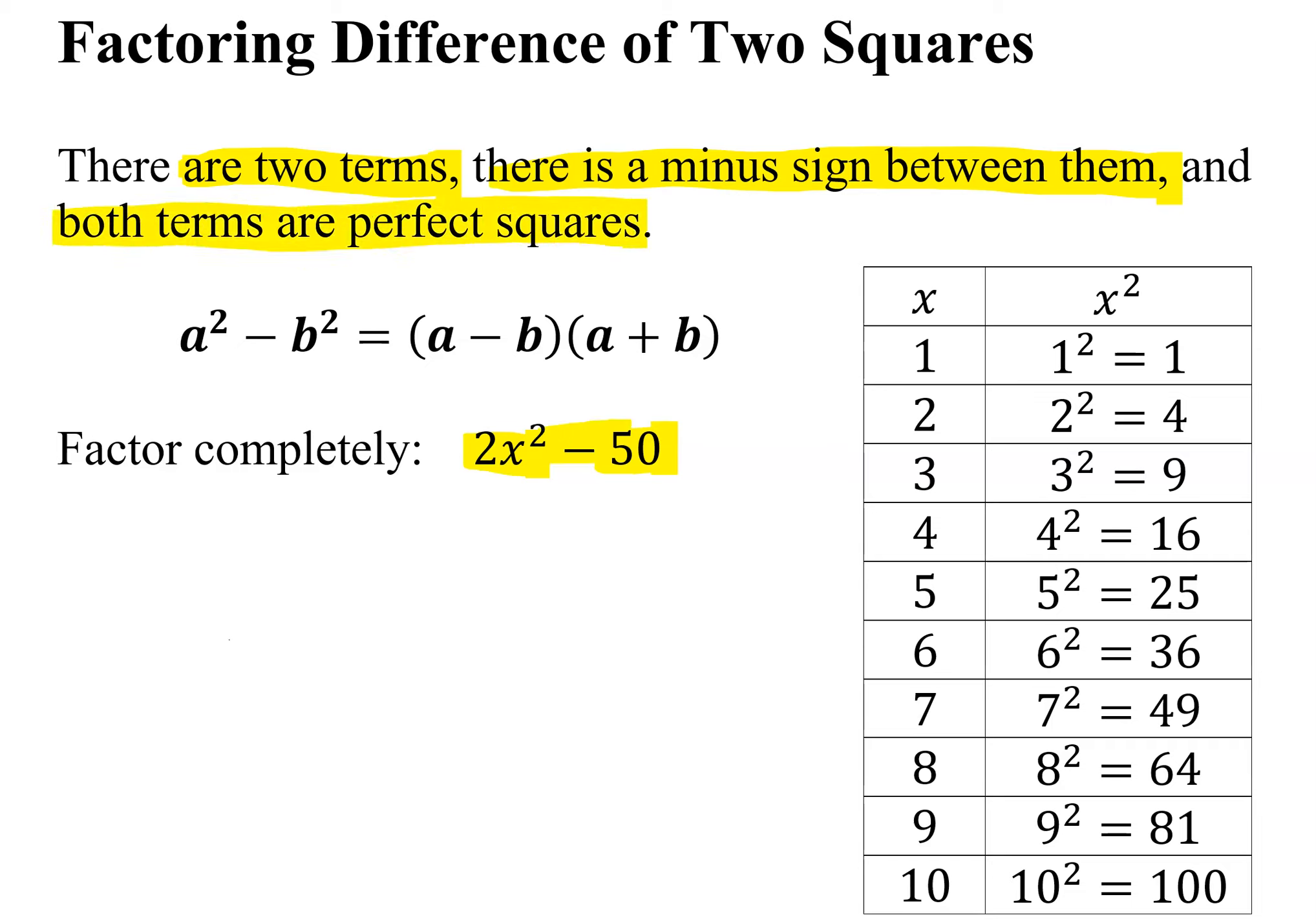And both terms have to be perfect squares. Well, let's look at our term. Is 2x squared a perfect square? Here's a list of the first 10 perfect squares. Notice 2 is not among them. And is 50 a perfect square? No, it's not among them either. So a lot of students at this point go, oh, it's not the difference of two squares. I can't factor it.